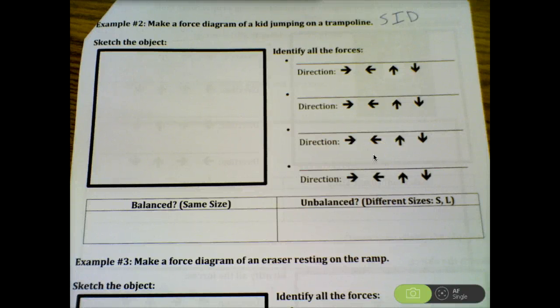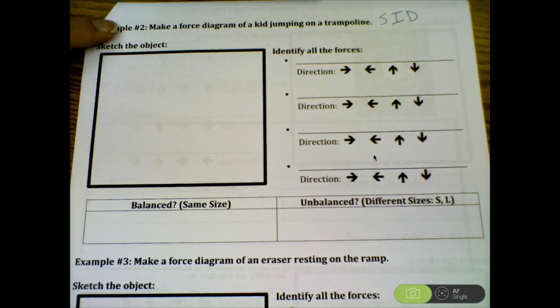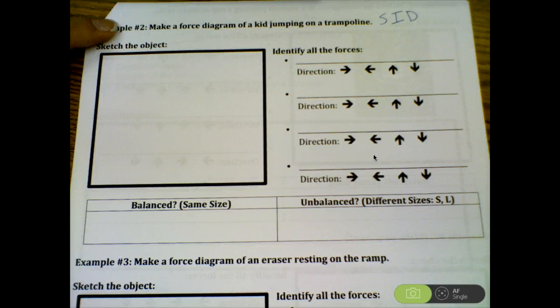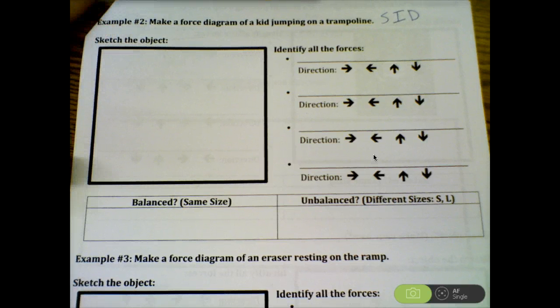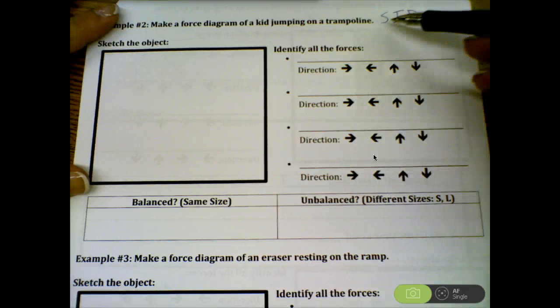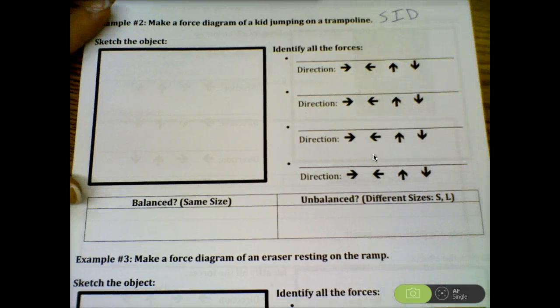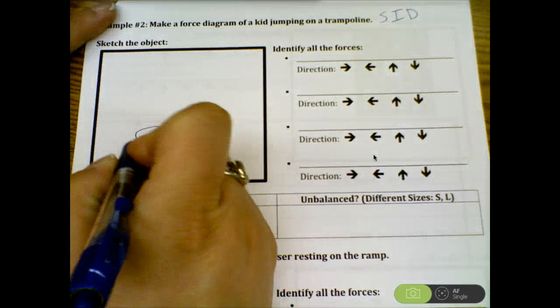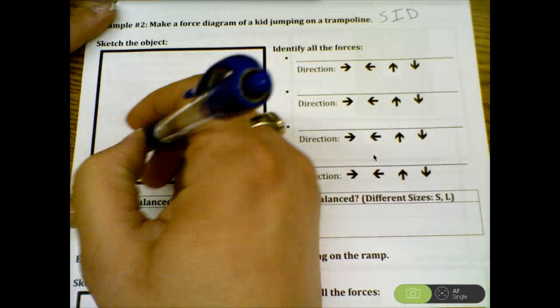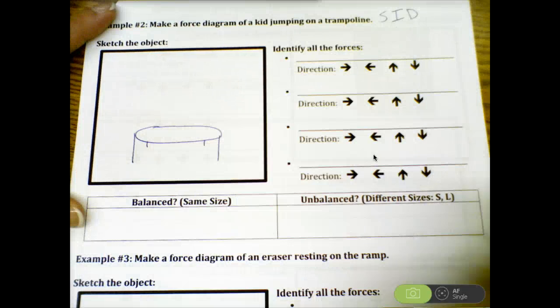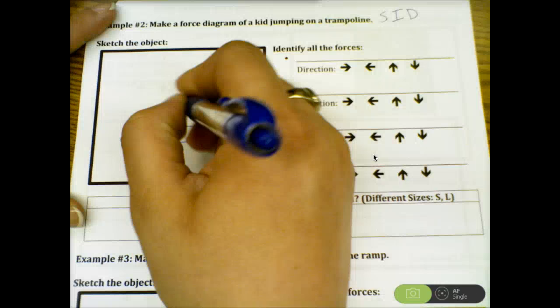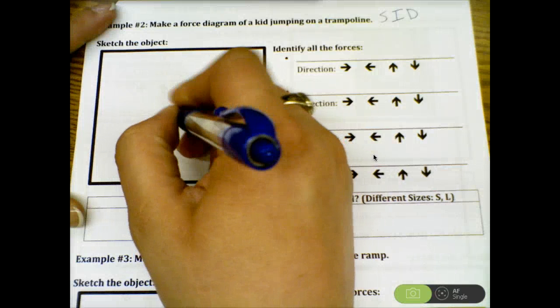Example number two says make a force diagram of a kid jumping on a trampoline. According to the SID method, the first thing we need to do is sketch the object. It does not have to be a masterpiece, but I'm going to just draw what looks like a trampoline and a person on it.